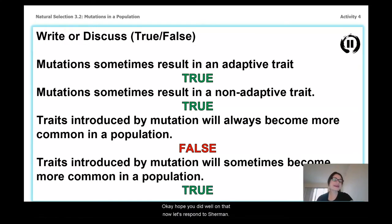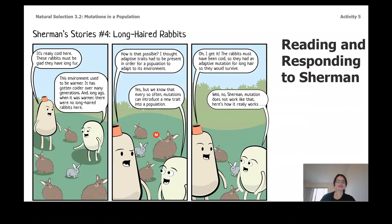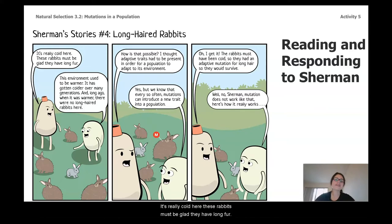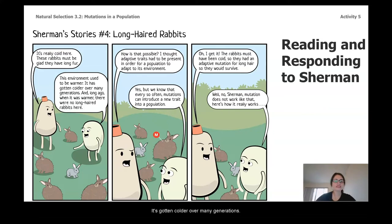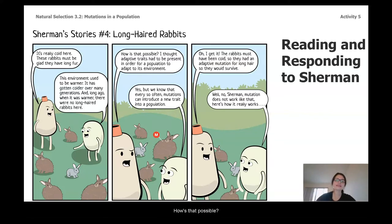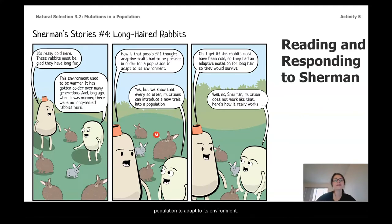Now let's respond to Sherman. Sherman says: 'Long-haired rabbit — it's really cold here, these rabbits must be glad they have long fur. This environment used to be warmer; it's gotten colder over many generations. Long ago when it was warmer, there were no long-haired rabbits here. How's that possible? I thought adaptive traits had to be present in order for a population to adapt to its environment.'